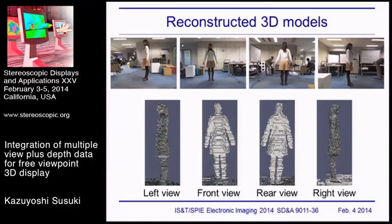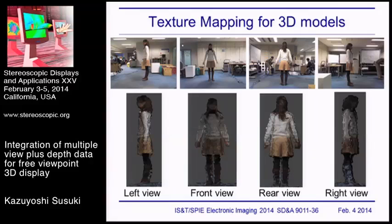This is an example of the obtained 3D model. The upper four images are input 2D color images, and the lower four images show the left view, front view, rear view, and right view of the reconstructed 3D model. However, this model does not have any color information. By projecting color information from 2D images onto the 3D model, a textured 3D model is obtained.